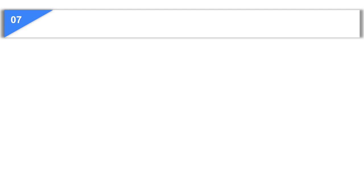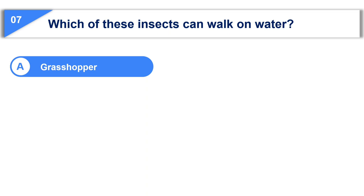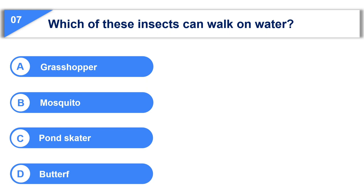Moving to the seventh question. Which of these insects can walk on water? Option A, grasshopper. Option B, mosquito. Option C, pond skater. Option D, butterfly.